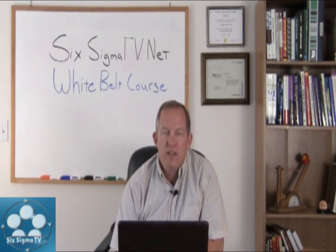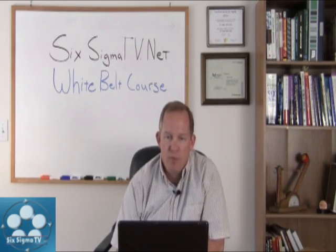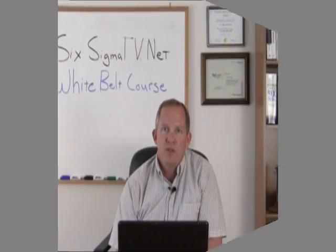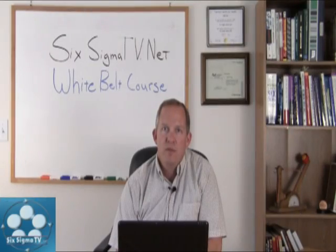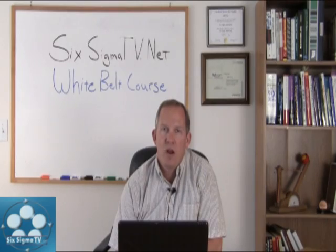Here's more detail on the Lean Six Sigma roles and responsibilities. First, we have our deployment champion — those are the ones responsible for setting the direction of Six Sigma and leading the initialization and deployment efforts. They determine how the program will work: selecting the people, selecting the vendors to train the people, and understanding how to coach these folks to success by helping them select the right projects and apply the methodology to make those projects a success throughout the organization.